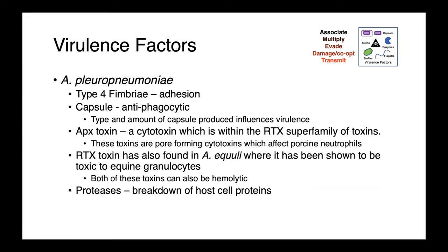Actinobacillus pleuropneumoniae is probably best studied from a virulence perspective. It's known to produce type 4 fimbriae involved in adhesion, and a capsule — that antiphagocytic force field that bacteria surround themselves with. The type and amount of capsule produced has been demonstrated to impact virulence, so not all strains are equal. They produce cytotoxins — specifically the APX toxin — which is able to damage porcine neutrophils. Other species such as Equuli produce similar toxins toxic to equine granulocytes. They also produce proteases, which allow them to break down host cell proteins and facilitate invasion.